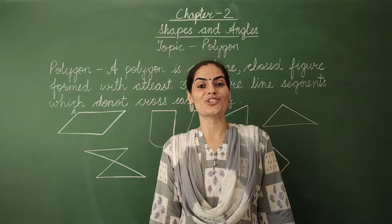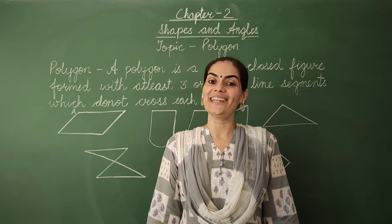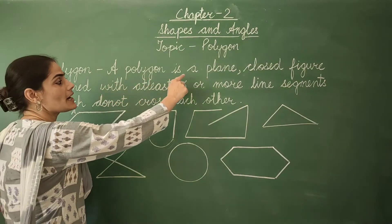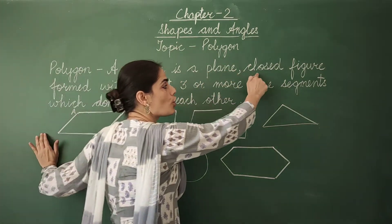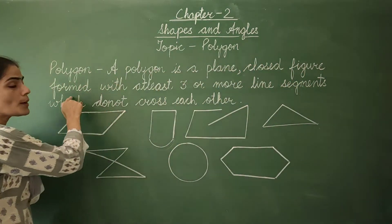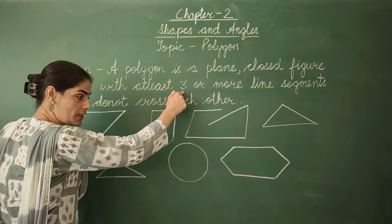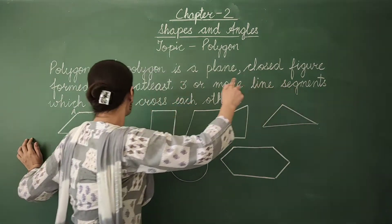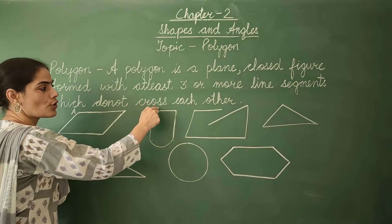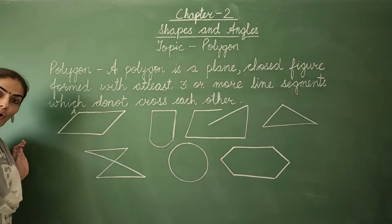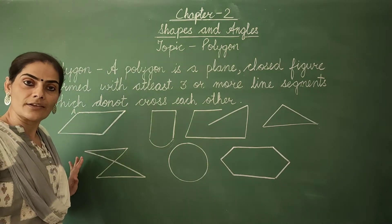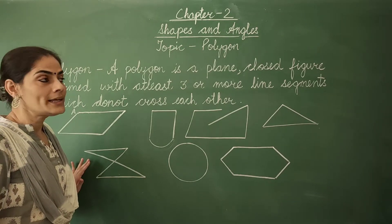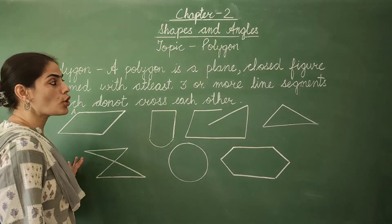Now with the help of this definition we are going to learn its meaning in depth, in detail. So a polygon is a plane, closed figure formed with at least three or more line segments which do not cross each other. This definition itself actually tells you about all the properties of a polygon. Let me underline those important points.